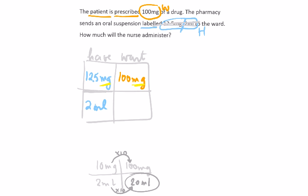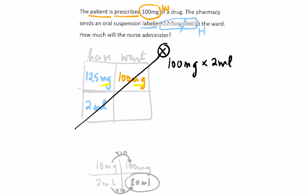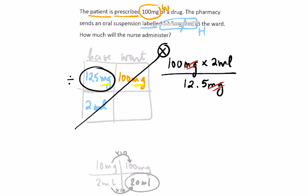Now we look at the two diagonals. The main diagonal has two numbers, so we start there: 100 milligrams multiplied by 2 mils. We multiply those two elements, then divide by the third quantity — 12.5 milligrams. For those who like seeing unit cancellation: the milligrams cancel top and bottom, and the only unit left is mils. So I already know the final answer will be in mils — and it matches the left side of the box, which needs mils.